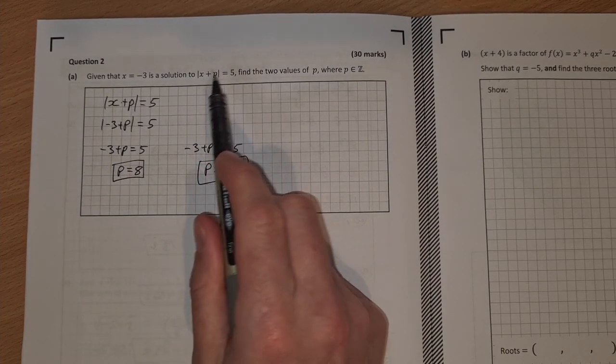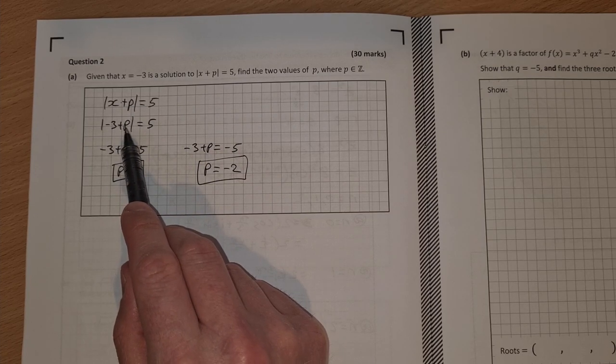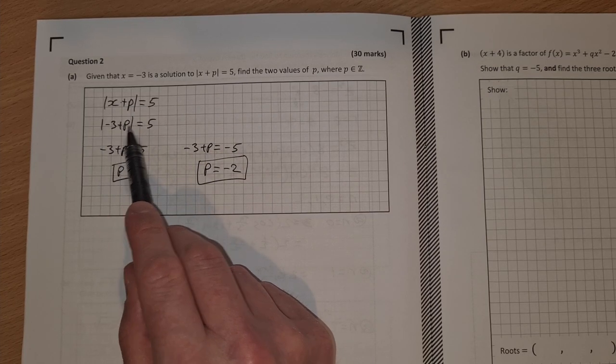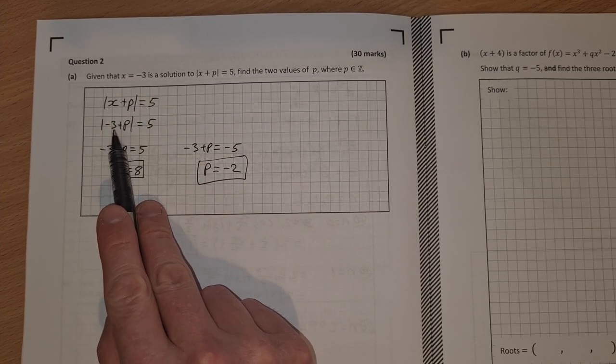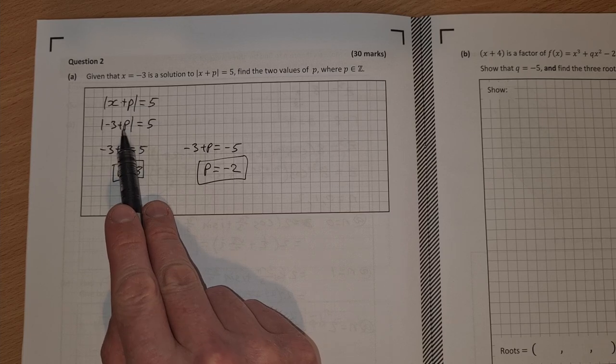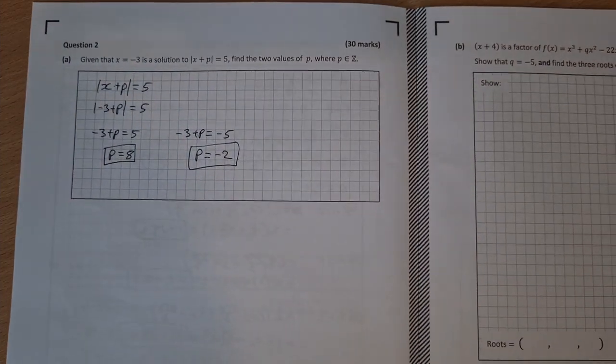You can double check it if you want. You'd have minus 3 plus 8 is 5 and 5 is equal to 5. You'd have minus 3 minus 2 is minus 5. Absolute value of that is plus 5. That's equal to 5. So very simple question for a Higher Level paper.